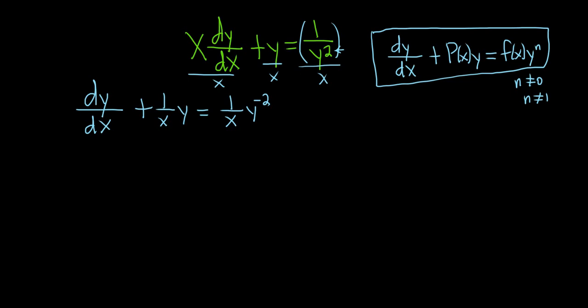The next step is to identify n. So in this case, n is negative 2. And then we make a substitution. The formula is u equals y to the 1 minus n. So you carefully plug in the n. This is y to the 1 minus negative 2, so this is y to the 3. So u equals y to the 3.